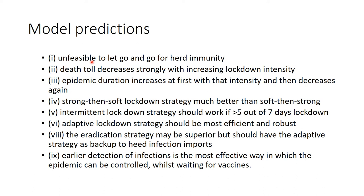In total, our model outcomes are: first, it is unfeasible to let the epidemic go for herd immunity — that would kill three percent of the population. Second, the death toll decreases very strongly with increasing lockdown intensity. Third, the duration of the epidemic first increases with lockdown intensity — a stronger lockdown initially makes it last longer — but then if you increase it further, the epidemic lasts shorter. You should therefore be above the threshold level so the epidemic is both short and has a low death toll. A strong then soft lockdown is much better than a soft then strong lockdown.